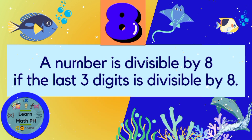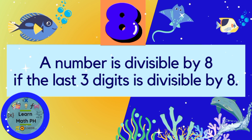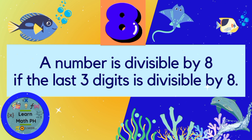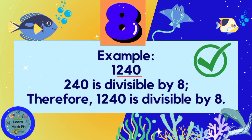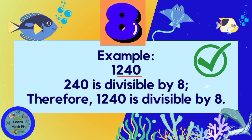A number is divisible by 8 if the last 3 digits are divisible by 8. So, yung original number is divisible by 8 kung yung last 3 digits ay divisible by 8. Halimbawa, yung kukuhin natin is yung last 3 digits — yun yung 240. Is 240 divisible by 8? Yes. Therefore, 1240 is also divisible by 8.